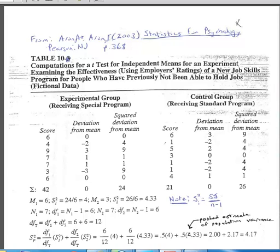This is a video that concerns the hand calculation of an independent samples t-test. The example we'll be using is taken from the book Statistics for Psychology, third edition by Aaron and Aaron, published in 2003, from page 368 of that book.